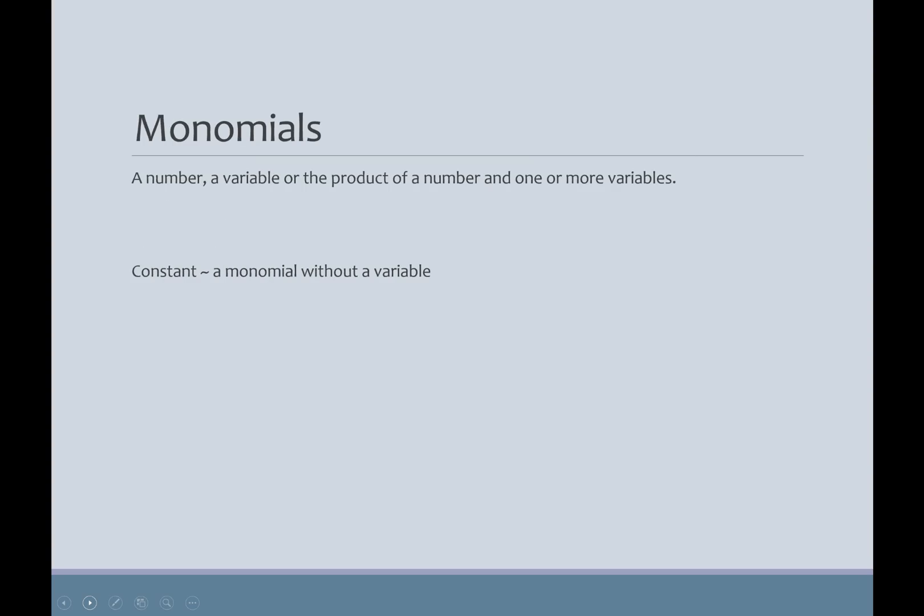So what is a monomial? A monomial is just a number, a variable, or the product of a number or one or more variables. So product is the key word. Remember product means multiplication. So examples of monomials might be 5x.